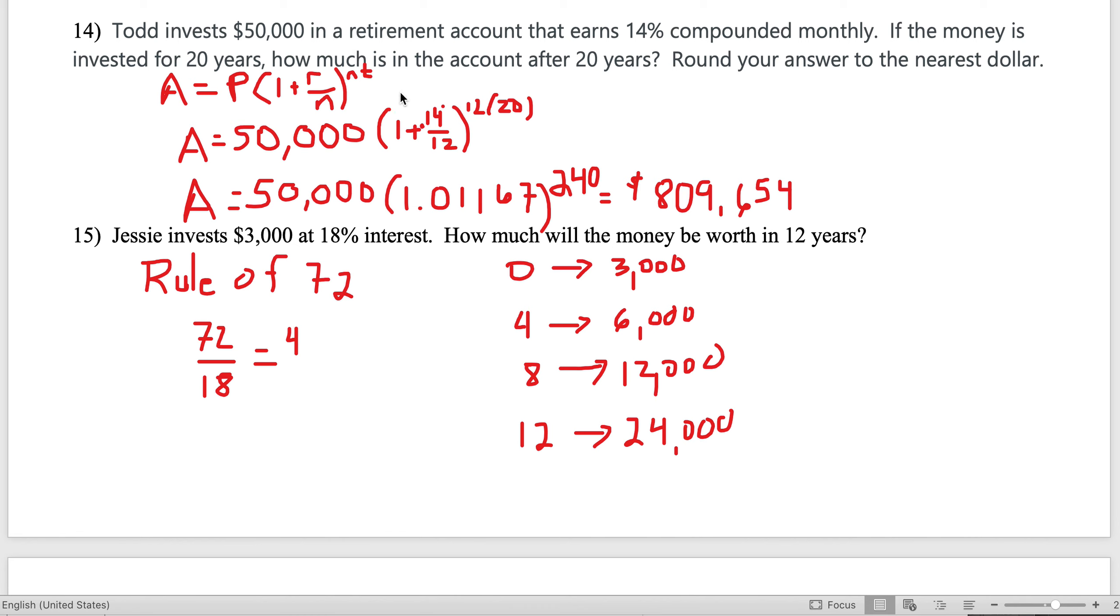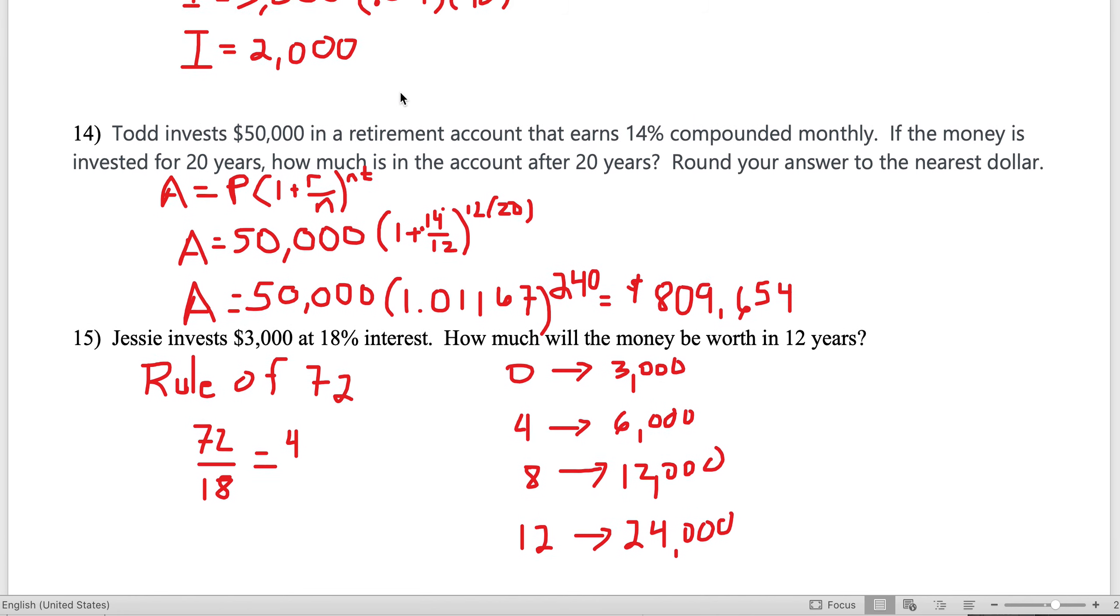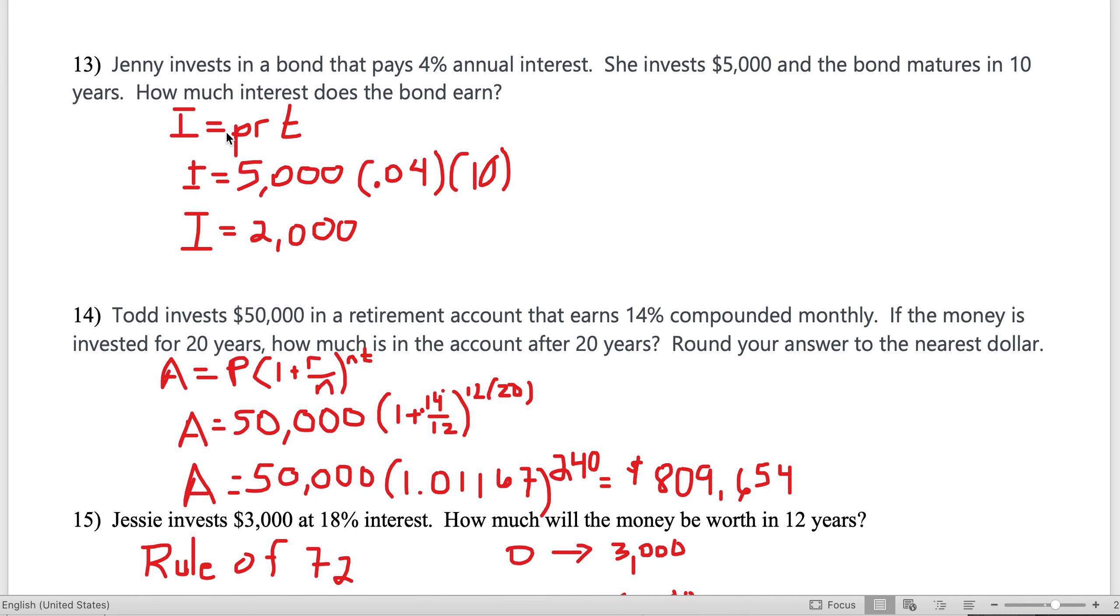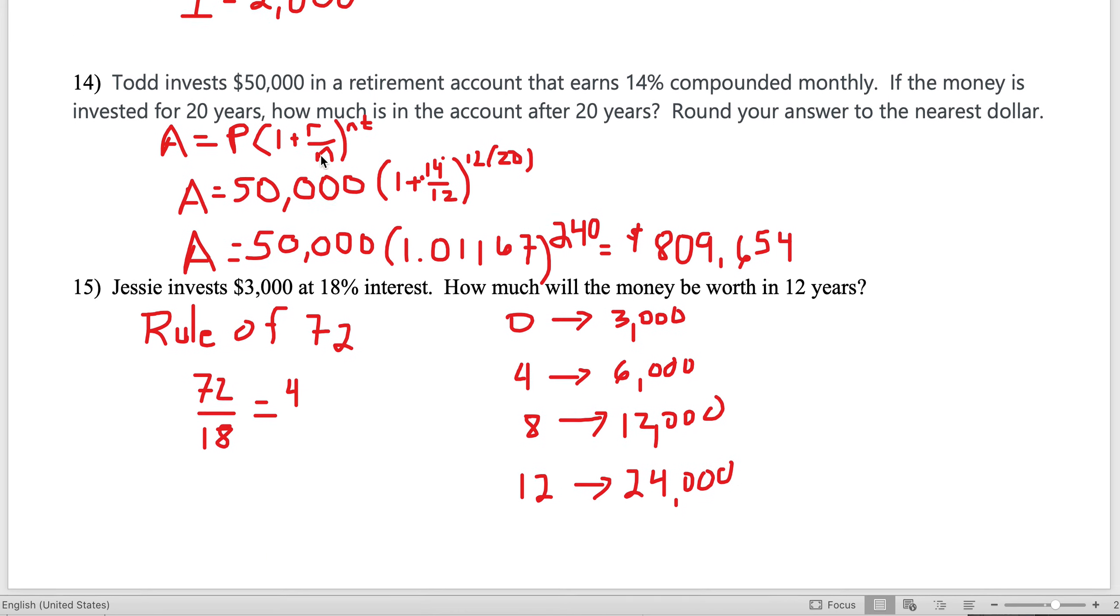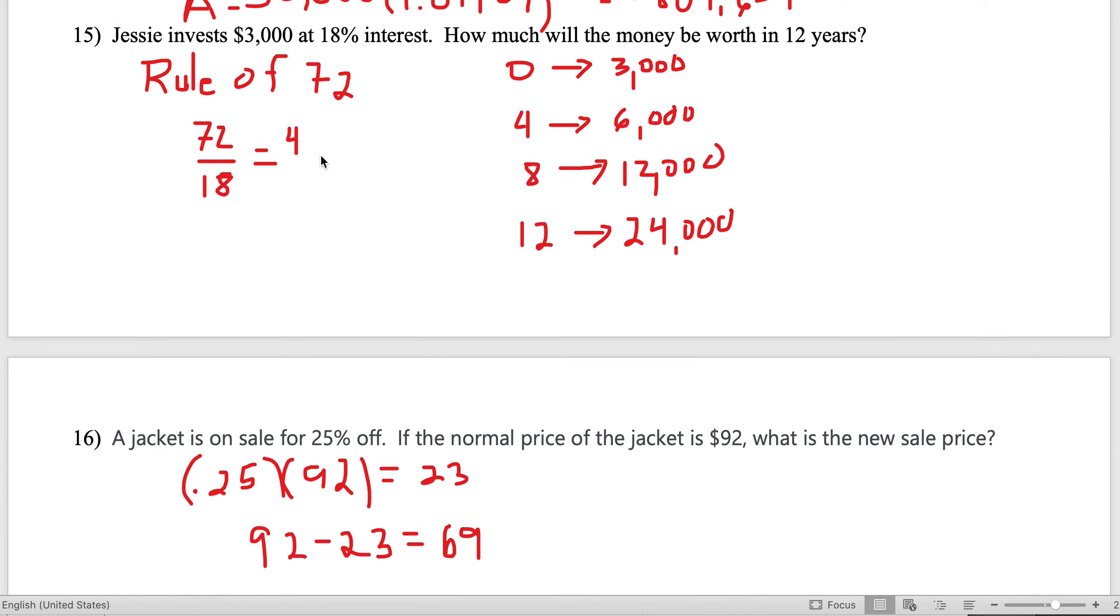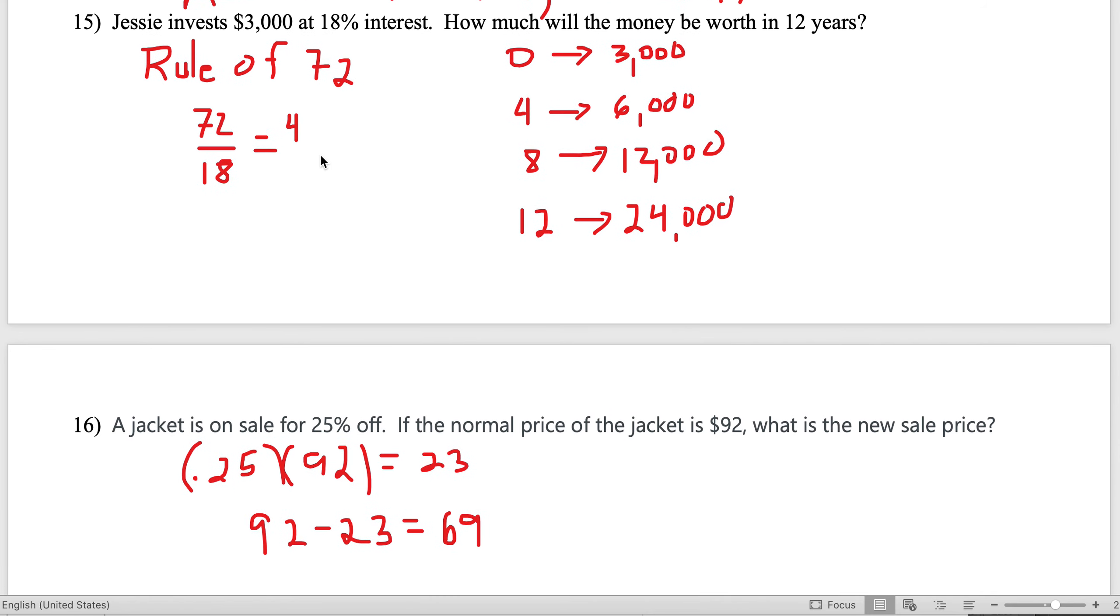If I do 1 plus 0.14 divided by 12, I will get 1.01167, then just let the calculator do its thing and I come up with $809,654. If you're compounding the interest, this is the formula you're going to use. If you're doing simple interest, it's I = PRT.